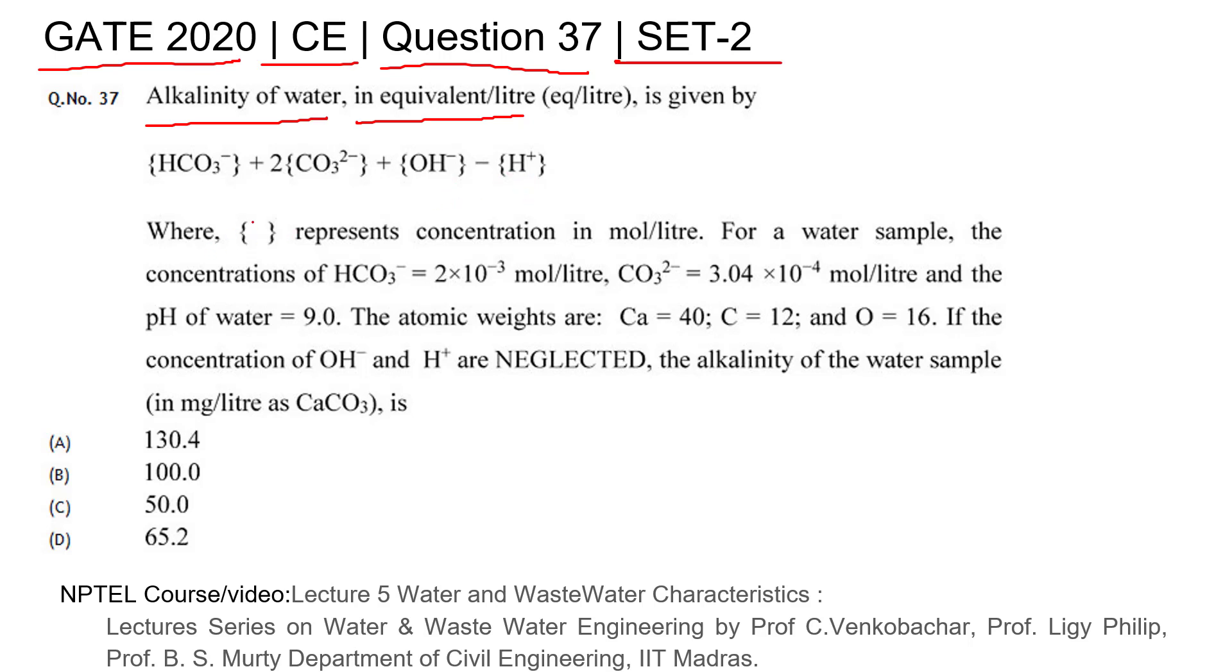Some of you might be representing like this; here they have mentioned the concentration in mole per liter. For a water sample, the concentration of HCO3 minus is 2×10^-3 mole per liter. Similarly, they have mentioned the concentration of CO3^2- carbonate. The pH of the water is 9.0. The atomic weights of calcium, carbon, and oxygen are given.